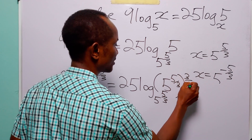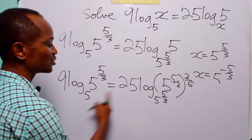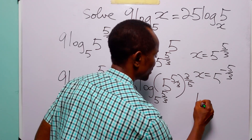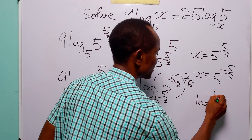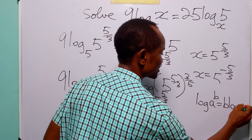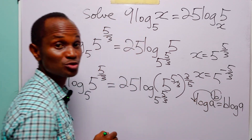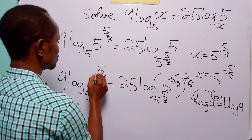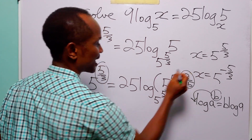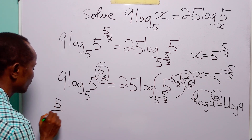Now we are going to apply the power law to both sides of this equation — the law that says when we have log of a^b, the exponent b can come to the front to become a multiplier. So we can bring out the exponents on both sides. When we do that, we have (5/3)...